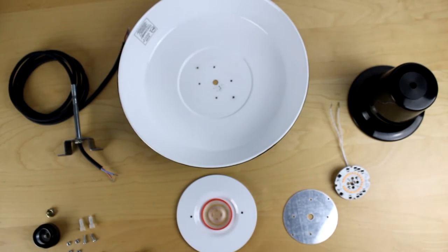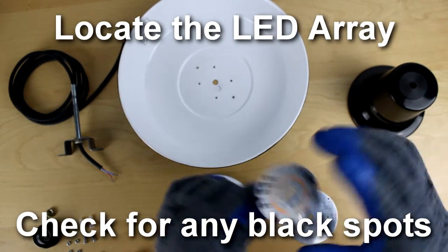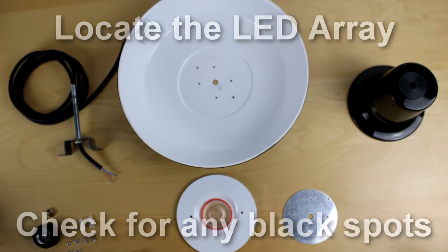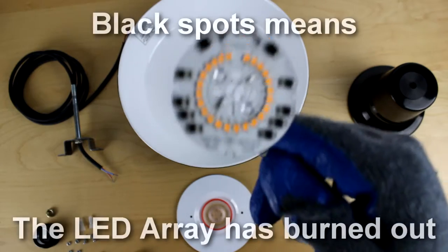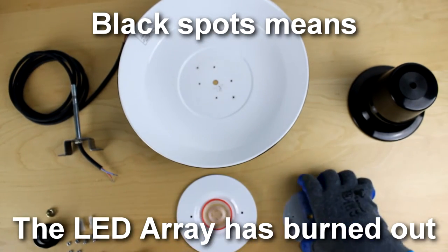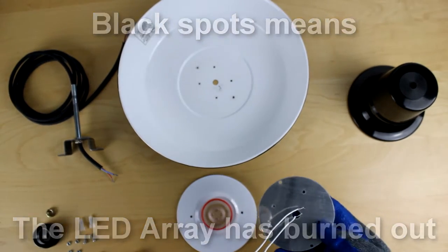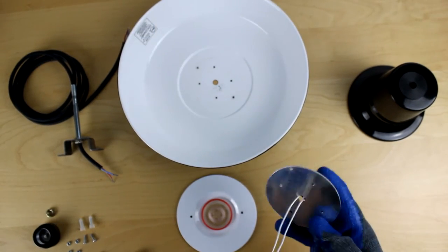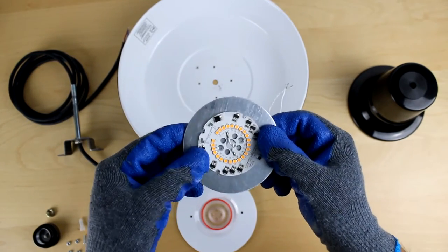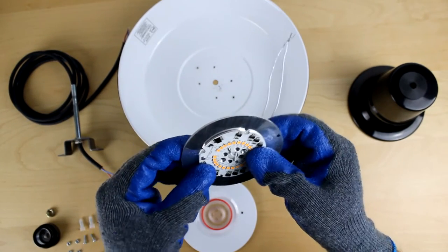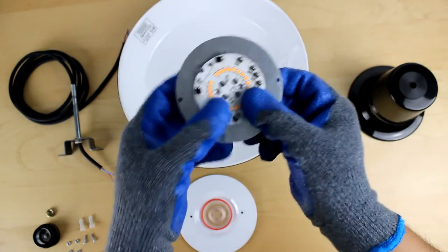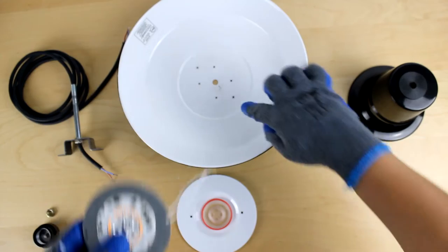When replacing the LED array, look for any black spots. Black spots means the light has been burned out. Now grab the new LED array purchased from CocoWeb and make sure it does not have any black spots. If so, please contact CocoWeb. Please make sure the LED array and the metal plate are aligned and the two outer holes are aligned with the shade.